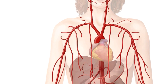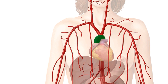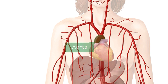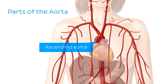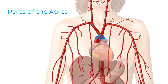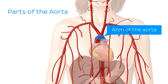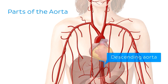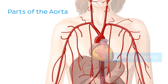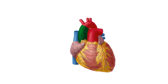We're going to start with the largest artery in the body, which is the aorta. Oxygenated blood leaves the heart through the aorta to enter systemic circulation. The aorta is divided into three parts: the ascending aorta, the arch of the aorta, and the descending or thoracic aorta. Now we're going to look at them in a little bit more detail.